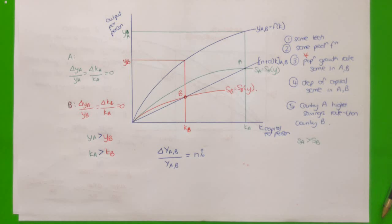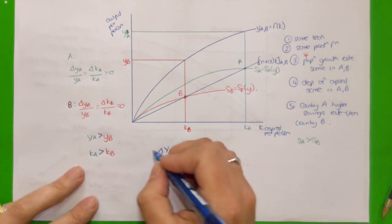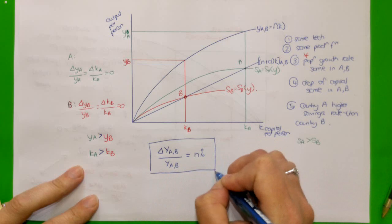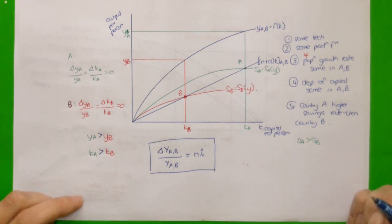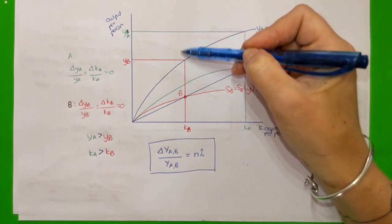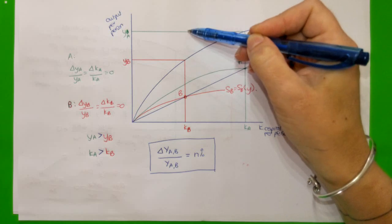This is just one example of conditional convergence. We say that country A and country B have converged conditionally because they share the same output growth rate — equal to their population growth rate — but they have different levels of output per person in steady state.